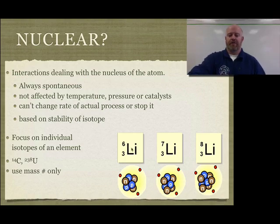So for example, we have three isotopes of lithium here. We have lithium-6, lithium-7, and lithium-8. So in all cases, they have three protons. That's our atomic number down here. But the mass number, 6, 7, and 8, are different because we have different numbers of neutrons.